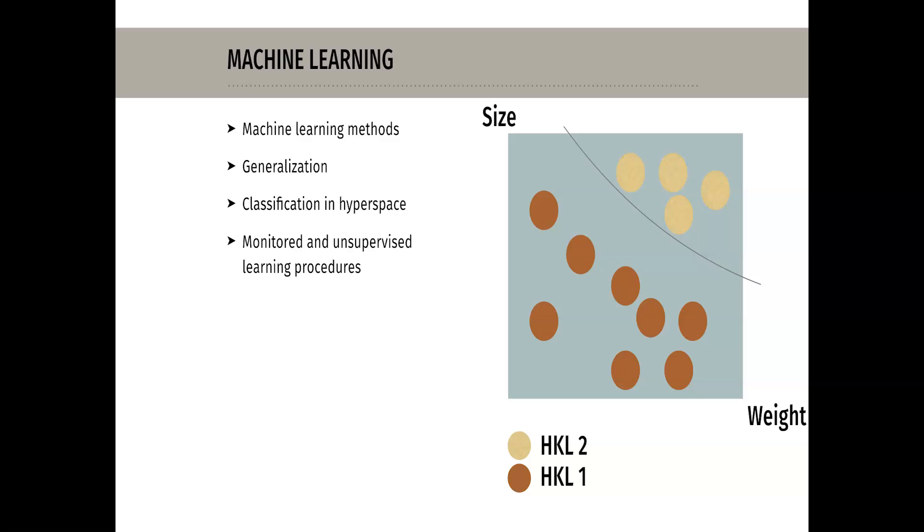Suppose we divide the potatoes into two classes, class A and class B. In this way, a machine learning procedure could calculate a classification curve as shown in the figure. In this case, only two characteristics were used for classification, namely size and weight. In the two-dimensional case, one can see very well how the boundaries of the classification curve run and which samples were assigned to grade A and which to grade B.